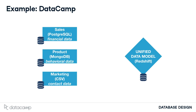Say DataCamp is launching a skill assessment module. Marketing wants to know which customers to target. They need information from sales, stored in PostgreSQL, to see which customers can afford the new product. They also need information from the product department, stored in MongoDB, to identify potential early adopters.